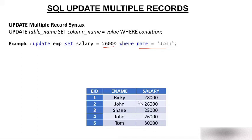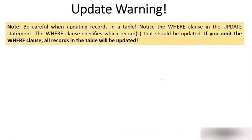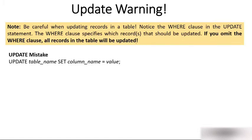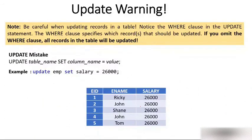Again, be careful when updating records. If you omit the WHERE clause, everything will get updated. For example: UPDATE imp SET salary = 20000 — with no WHERE clause. What happens is the salary of every employee gets updated to twenty thousand. This is the biggest mistake to avoid — always use the WHERE clause while updating.